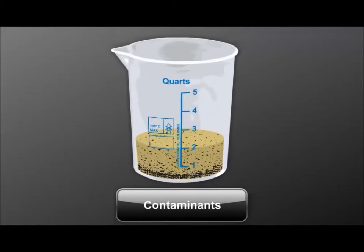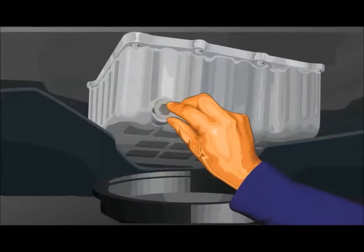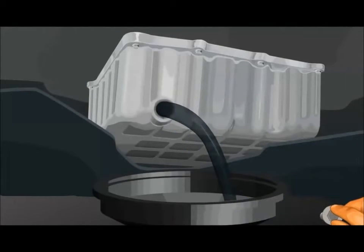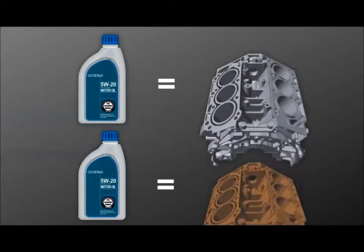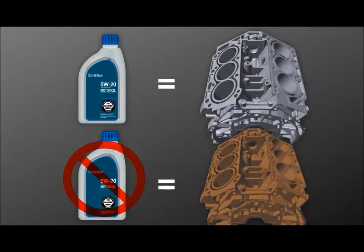Oil also isolates and suspends harmful contaminants between oil changes. By suspending these particles, every oil change flushes this damaging material out of the engine. Oil also protects against rust and corrosion by coating all internal engine parts, preventing oxidation.